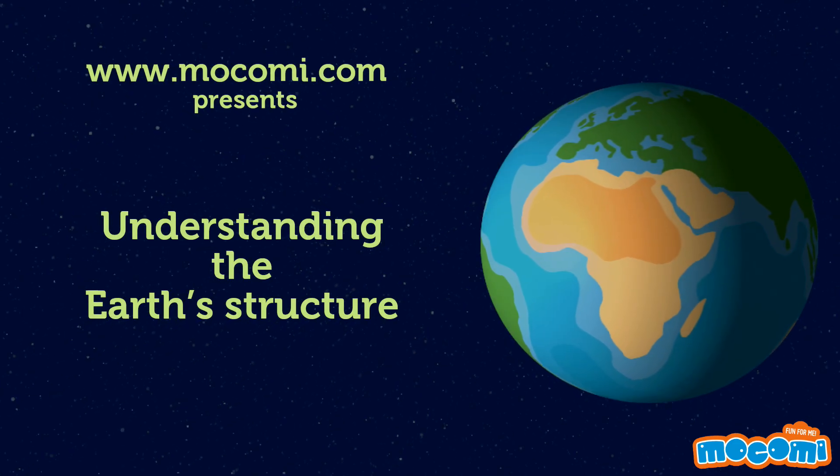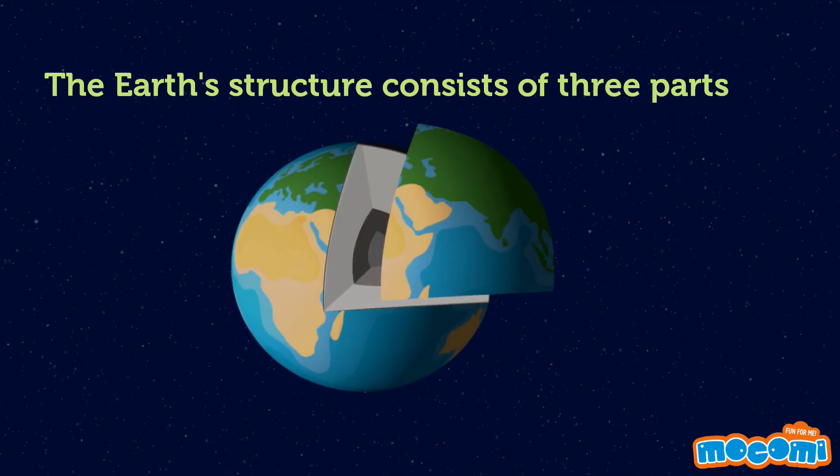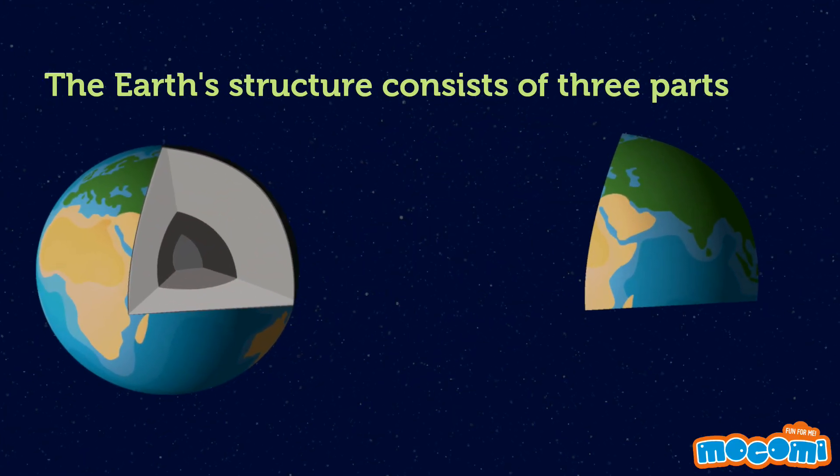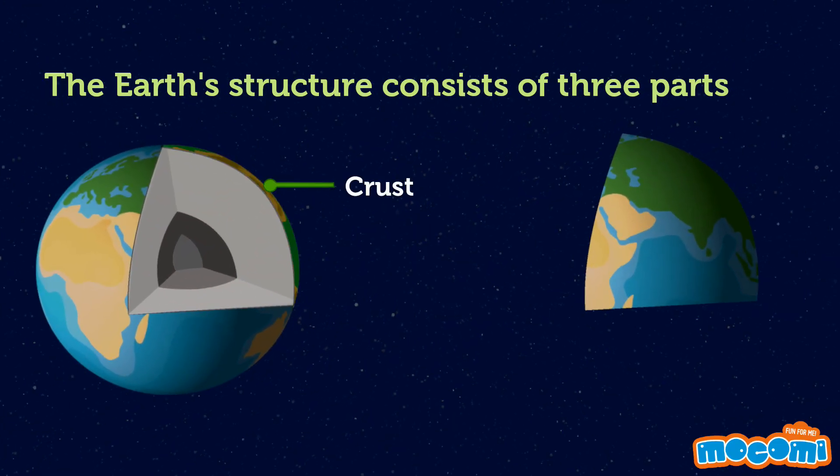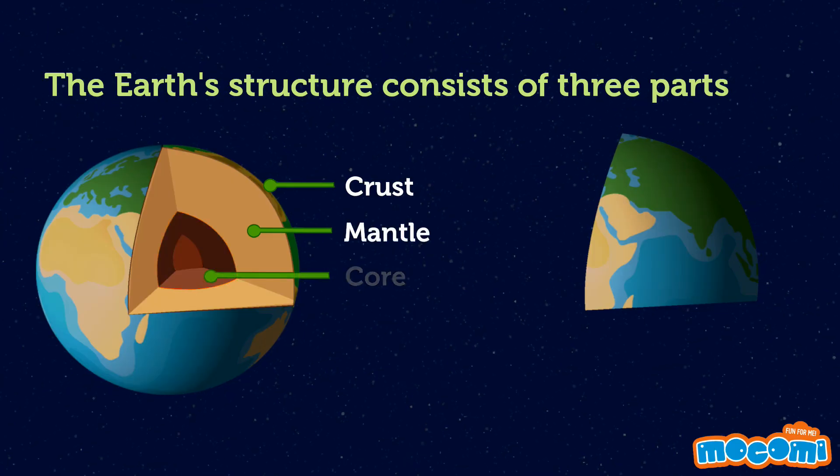Understanding the Earth's Structure. The Earth's structure consists of three parts: the crust, the mantle, and the core.